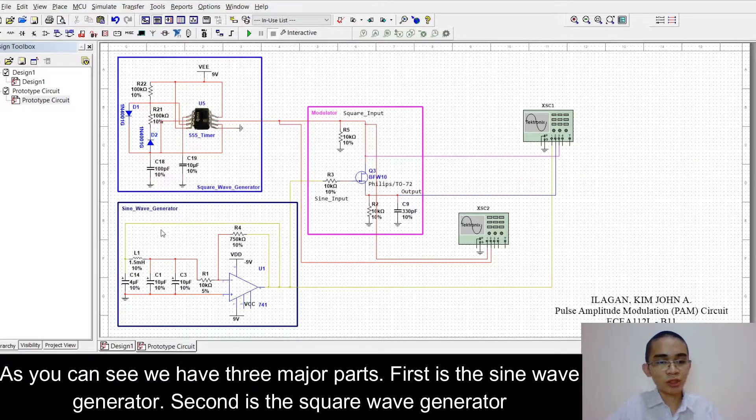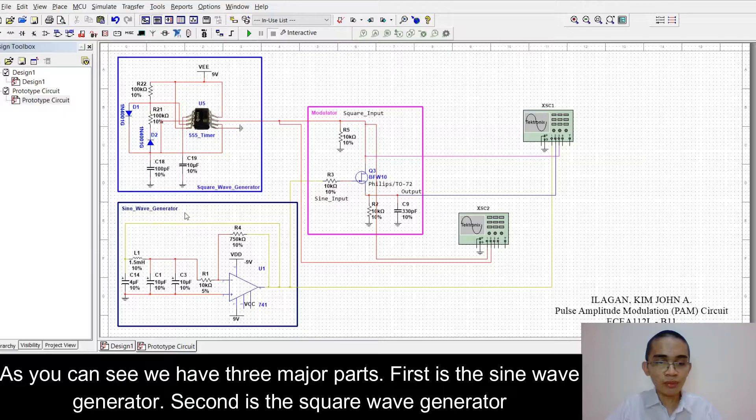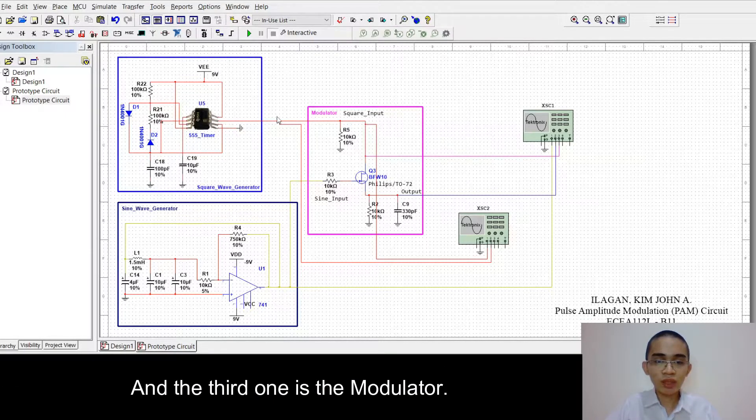As you can see, we have three major parts. First is a sine wave generator, second is a square wave generator, and the third one is the modulator.